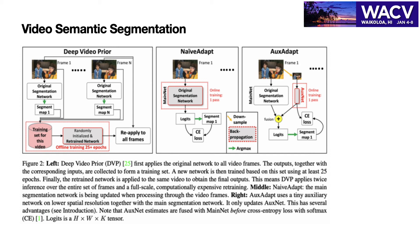We use the segmentation output as the label to train the AuxNet while fixing the main segmentation model. In this way, we can avoid model collapse while keeping the cost of the update very small, because we are only doing the update on the small AuxNet.